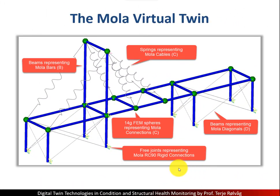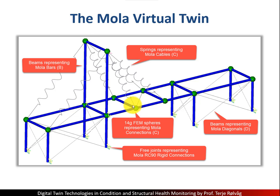This is my digital twin model. It's a finite element model assembled in FEDEM. I've used beam elements to represent the Moola bars — five elements to represent one long Moola bar. I used actual springs to represent the Moola cables, beam elements for the diagonals, and small finite element models with the correct mass of 14 grams to represent the spheres or connectors in Moola. Instead of using the Magnus or RC90 connectors, I modeled those as free joints in FEDEM. The free joints have six degrees of freedom, which enables me to release one degree of freedom at a time to introduce defects.